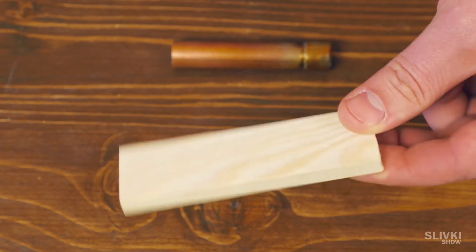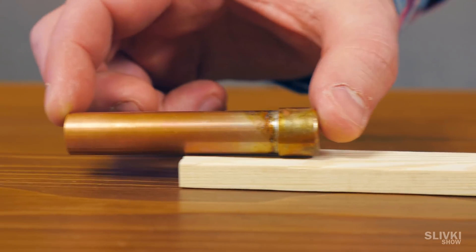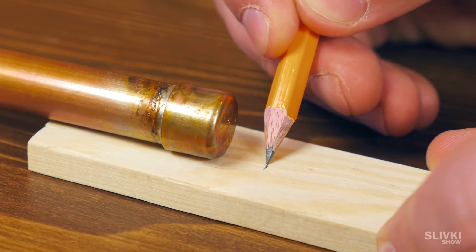Now take a 10 centimeter plank, put it on the tube as shown in the video and make a half an inch mark from the end.